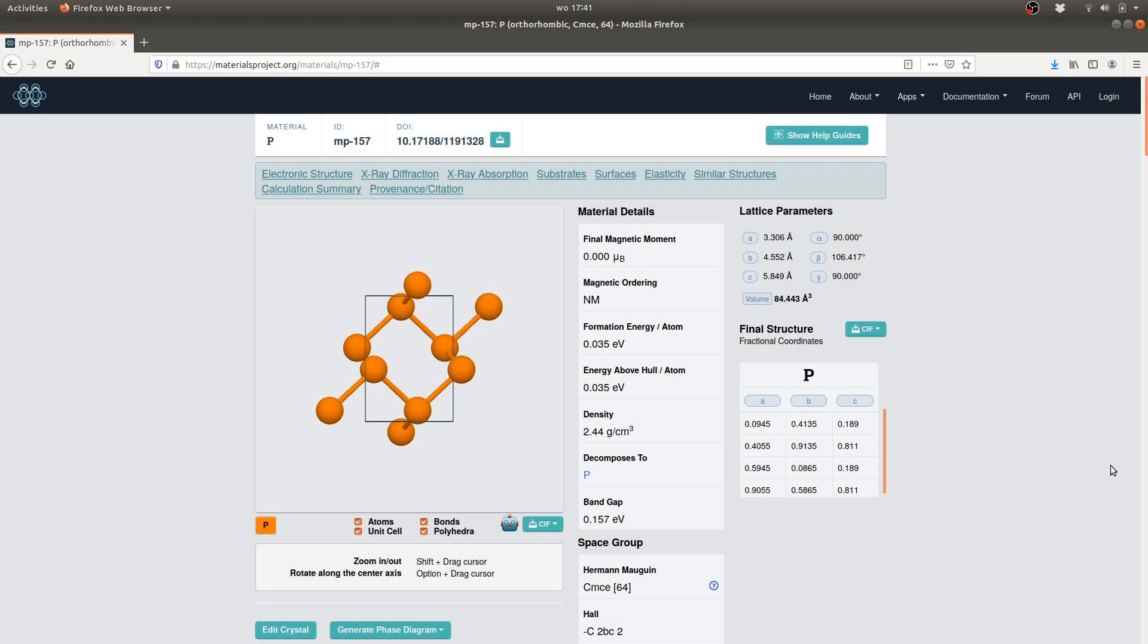To start setting up our calculation we begin with the structure. Now the structure of phosphorene itself is rather hard to find. Instead of that we will use the structure of crystalline black phosphorus and work our way from there.